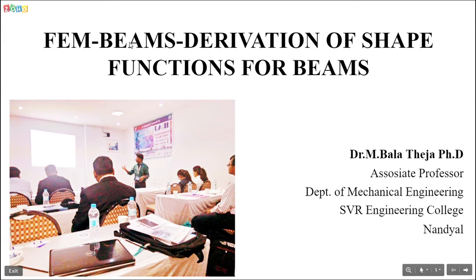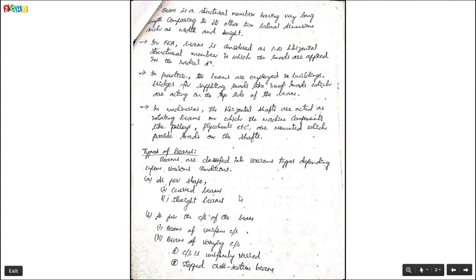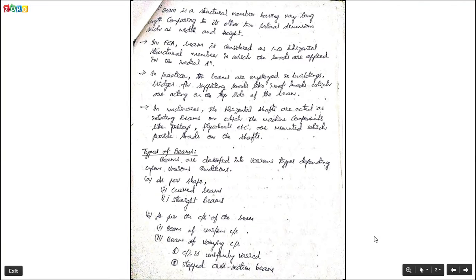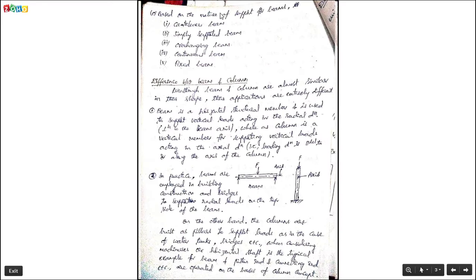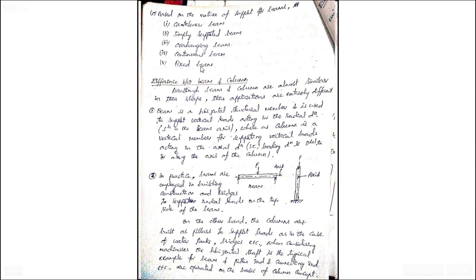Beams are classified into different types depending upon the conditions. As per shape: curved beams and straight beams. As per cross-section classification: beam of uniform cross-section, beam of varying cross-section, and tapered cross-section beam. As per the nature of support, beams are classified into cantilever beams, simply supported beams, overhanging beams, continuous beams, and fixed beams.